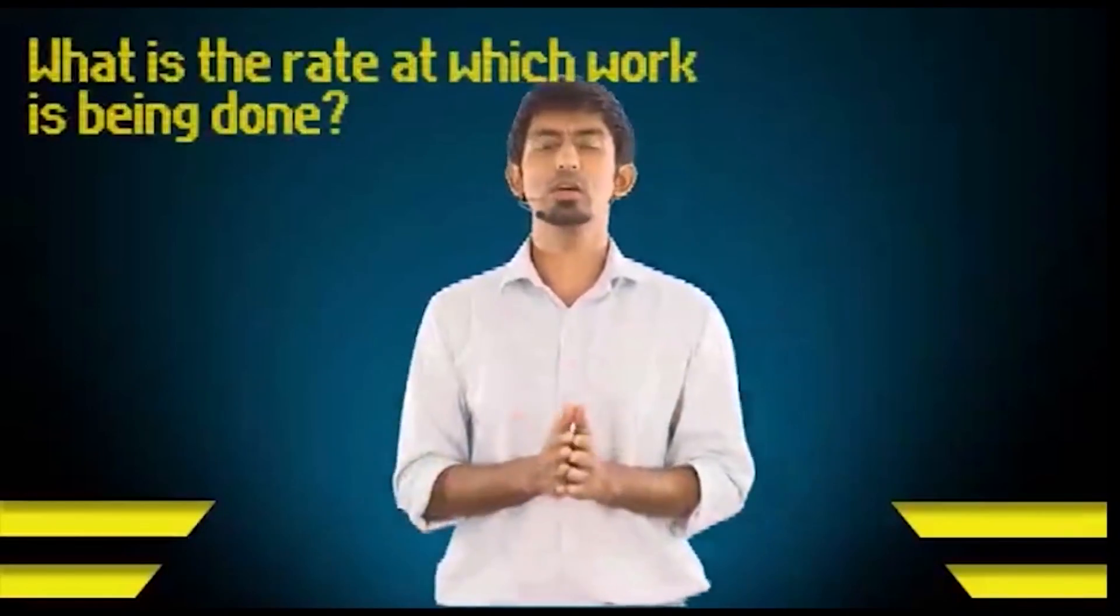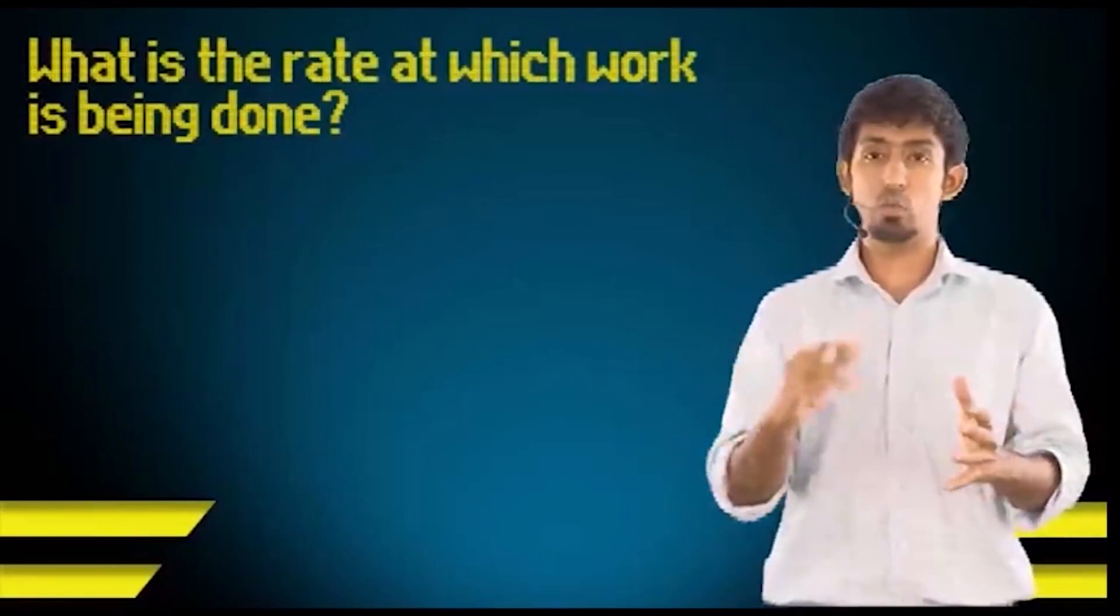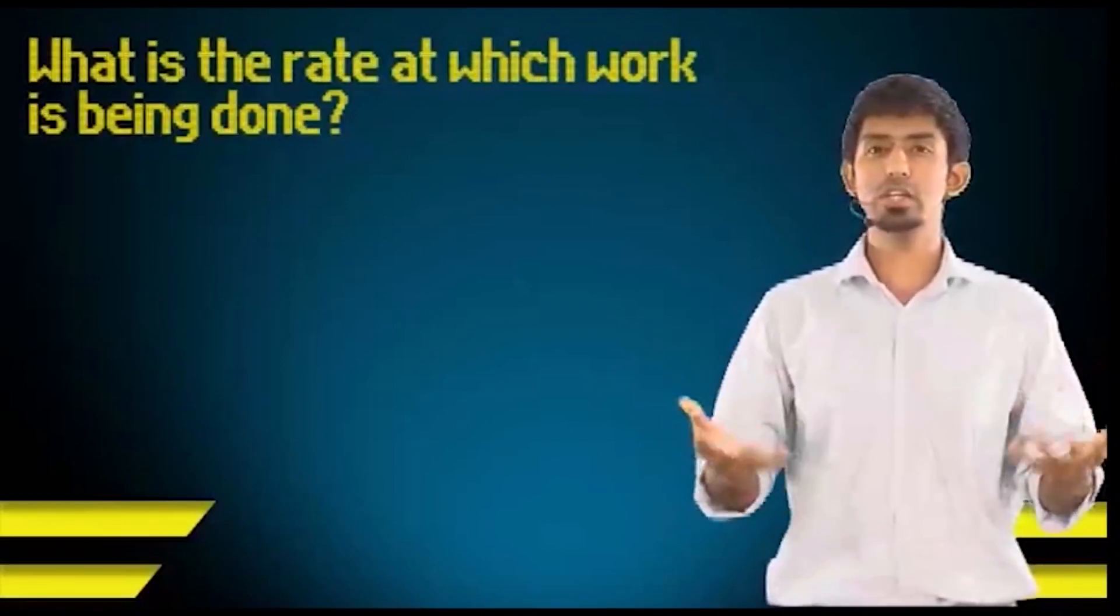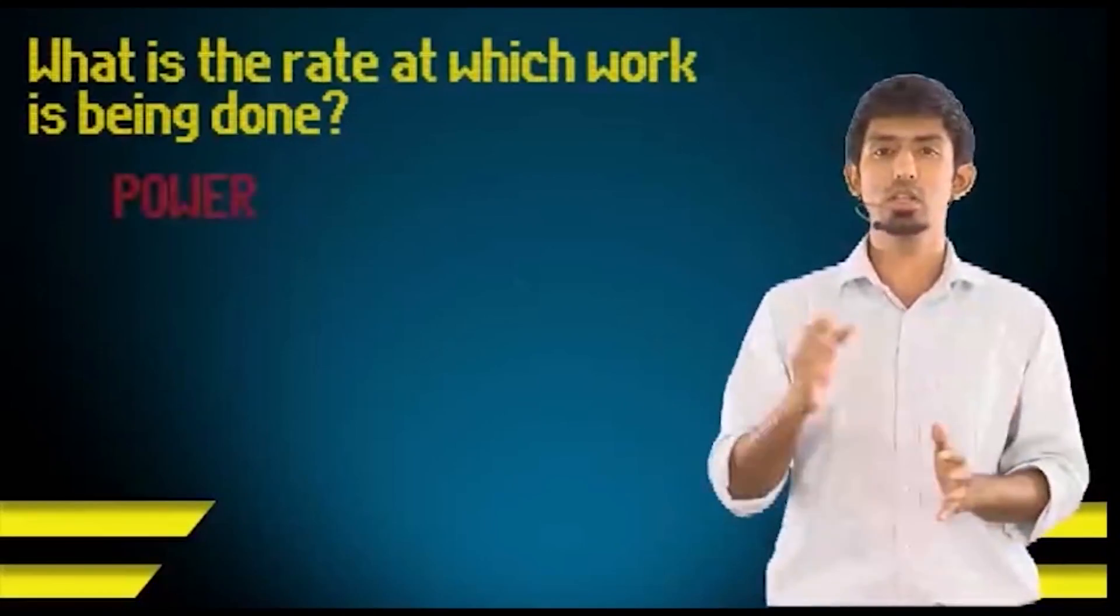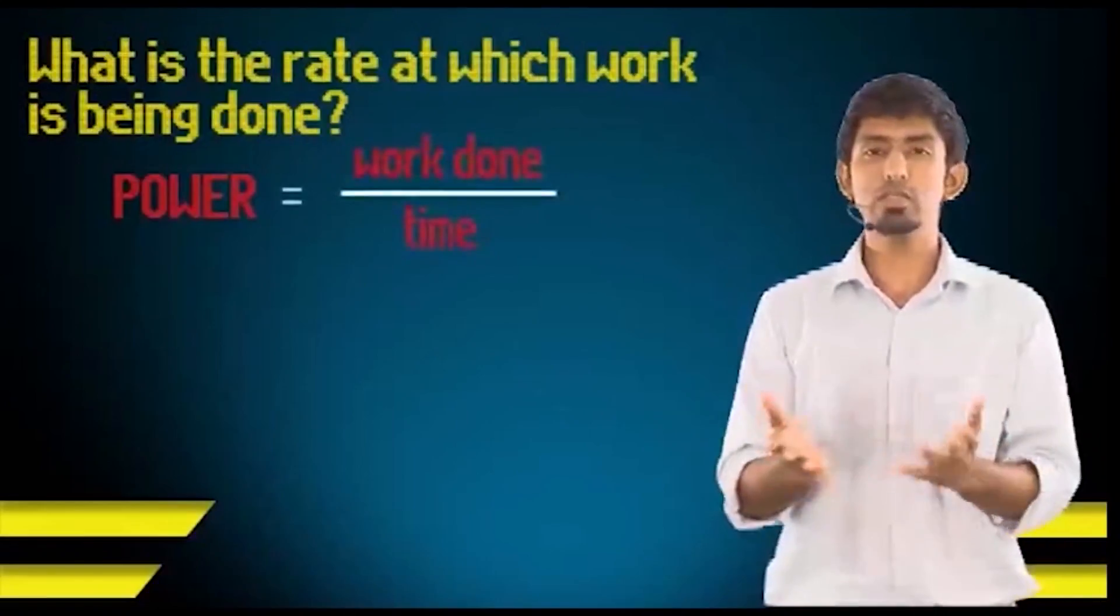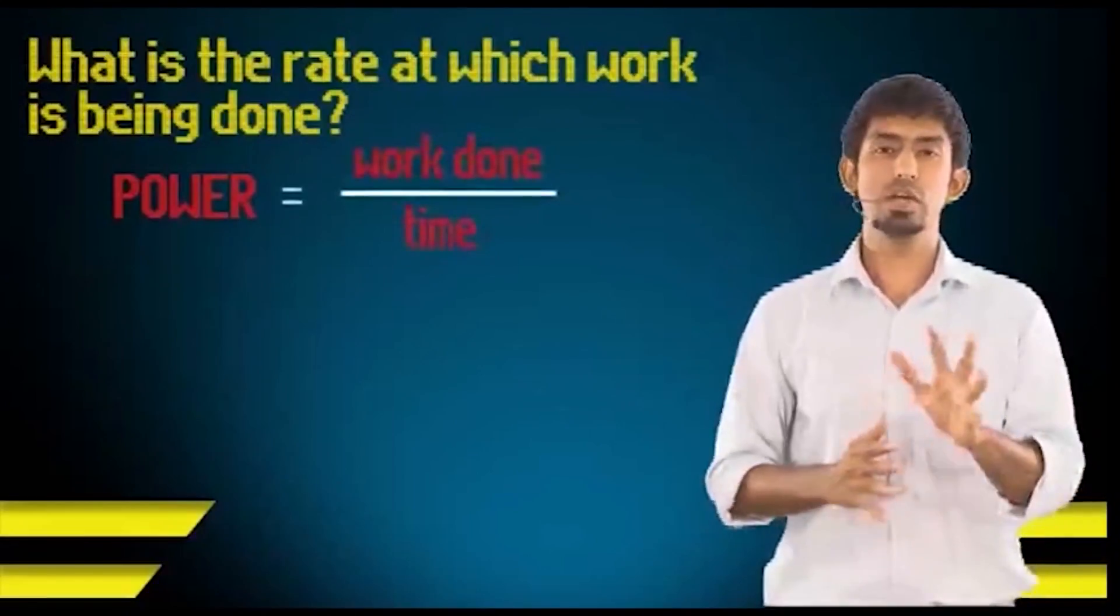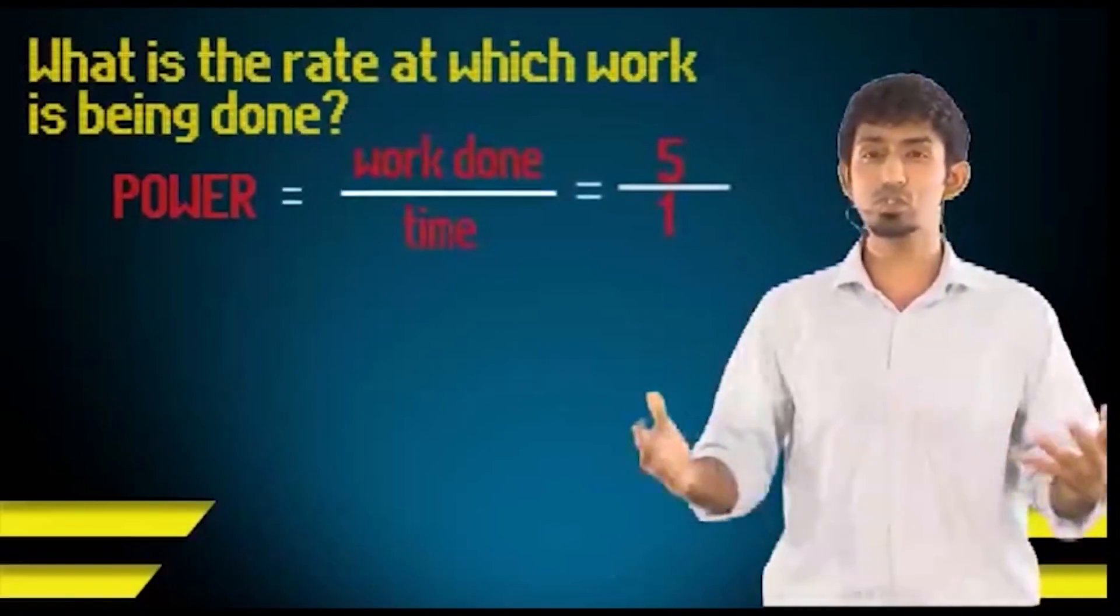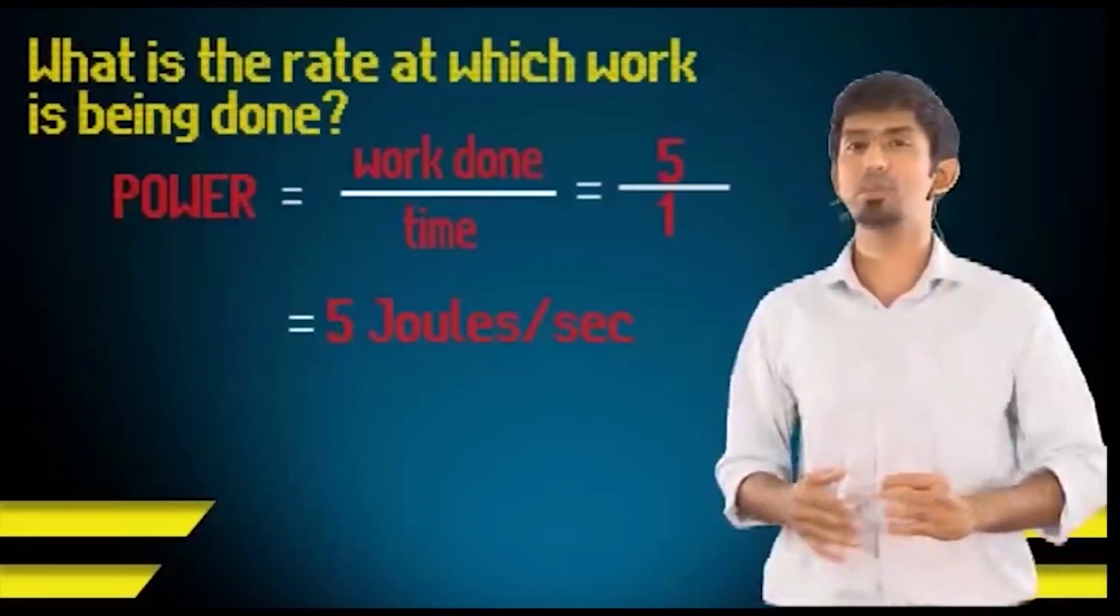And work is being done. But what is the rate at which this work is being done? So I might do 10 joules of work in one hour or 10 joules of work in just one second, and these two can't be the same. So we have a quantity to define this. It's called power, which is the rate at which work is done or the work done divided by the time. Which means that if you have a power of say 5, let's define the unit in a while, it means that for every unit of time you'll be doing 5 joules of work.